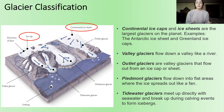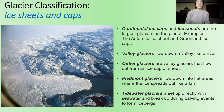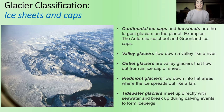First, we have continental ice caps and ice sheets, which are the largest type of glacier on the planet. Examples of this are the Antarctic ice sheet and the Greenland ice cap. These look like the picture shown here and are super expansive, as we all know from looking at Antarctica and Greenland.